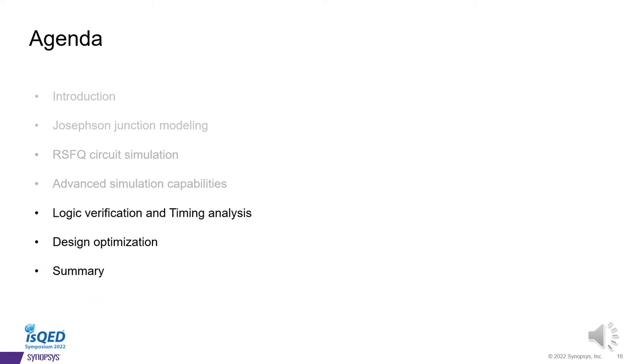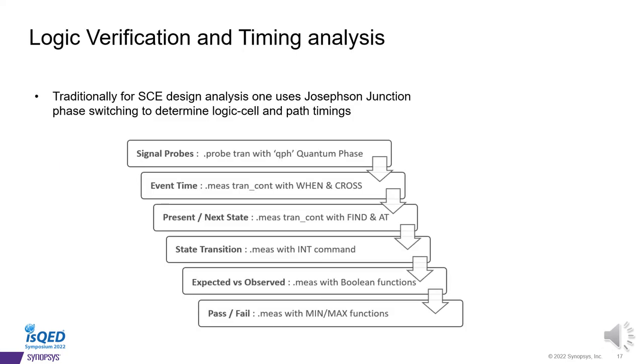For this final section of our presentation, I'll be discussing logic verification, timing analysis, and design optimization. For logic verification and timing analysis, we're going to leverage several HSPICE capabilities. The ability to probe the quantum phase of a node. The ability to measure events such as when, or cross, or at, using HSPICE continuous measurement approach, .measure tran cont. This will then give us the event timing of each switching event. From this, we can also determine what is the present state, and next state, and next-next state, from which we can deduce precisely when those state transitions occur.